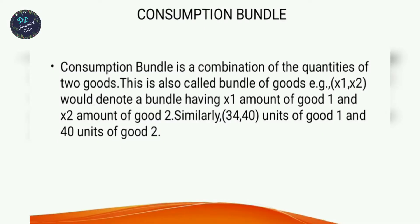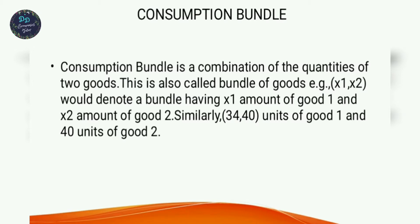A consumption bundle is a combination of quantities of two goods. It is also called a bundle of goods. For example, (x1, x2) is one consumption bundle, where x1 is the amount of good one and x2 is the amount of good two. For instance, (34, 40) means 34 units of good one and 40 units of good two.